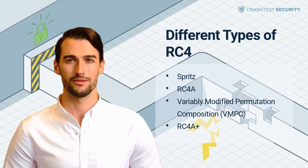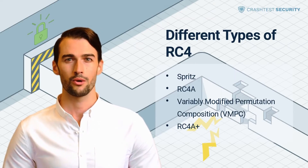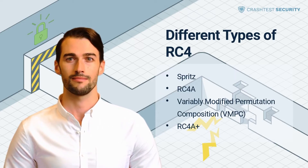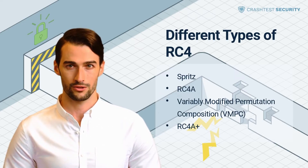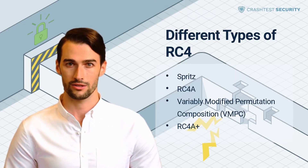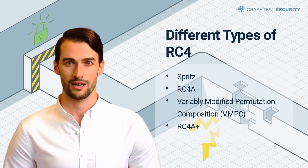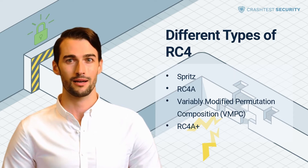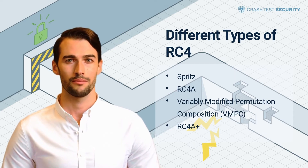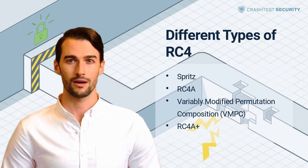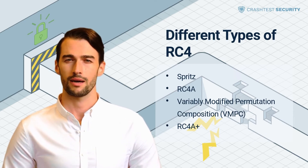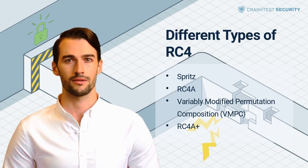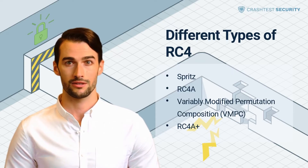RC4a was suggested as a more secure variant of RC4, but there were issues with the randomization of numbers in the cipher. Variably Modified Permutation Composition is another variant seeking better security but also struggling with number randomization.